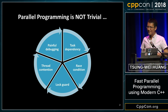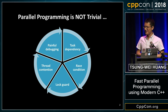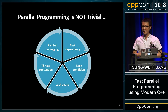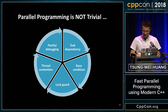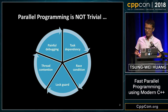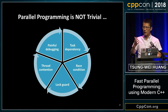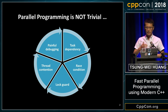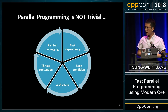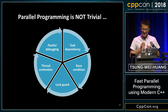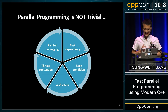I believe everyone here agrees parallel programming is a super important skill you should have. It's all about how to maximize the performance of your software and hardware so you can scale up your program across a different number of CPUs. At the same time, parallel programming is not a trivial task to do.